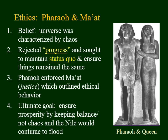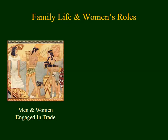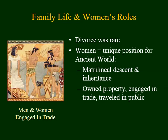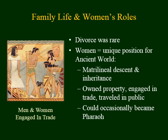Family life and women's lives were unique in Egypt as compared to Mesopotamia. First of all, divorce was quite rare in Egypt — it could happen, but it would be rare. Women occupied a unique position for the ancient world. Families traced their descent matrilineally, or through their mother, and items were inherited through one's mother rather than one's father. Women could own property, engage in trade, and even travel in public, sometimes with and even without an escort. And on some occasions, a woman could even become Pharaoh.